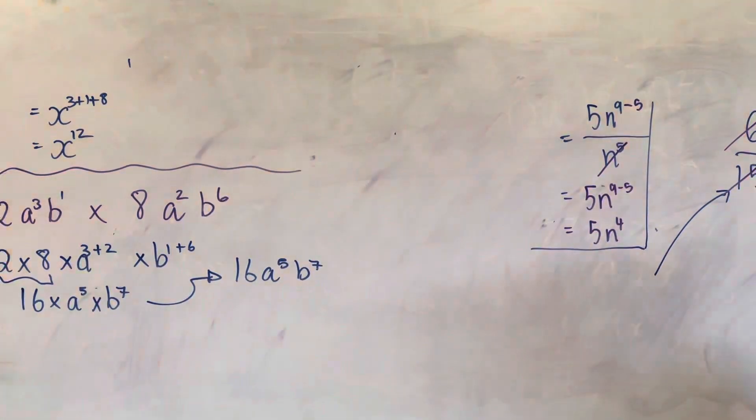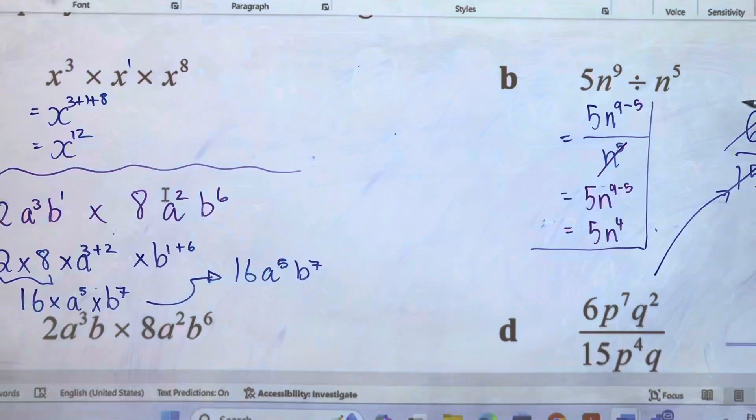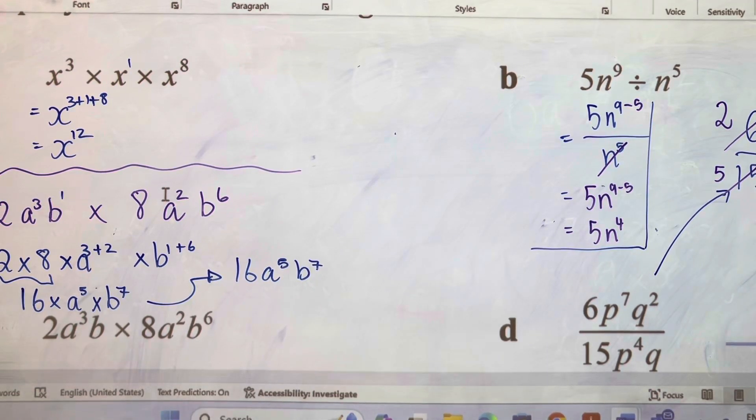So 6 divided by 3 is 2, 15 divided by 3 is 5. Now I'm going to look at my p's. This is the highest power, so I'm going to cancel that. It's going to be minus 4. This has got a q now. We're going to look at our q's, q to the power of 2 and q to the power of 1. How do I know that? Because I put the 1 there. Now I'm going to cancel this, it's going to be minus 1.